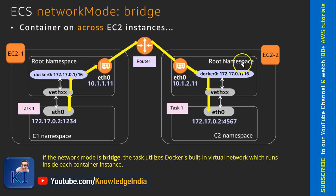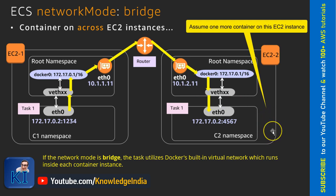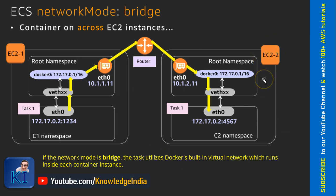For example, some traffic comes to this EC2 instance with IP address 10.1.2.11, on port 80. What happens next is it checks which container and which port that EC2 port 80 is mapped to. It might be that port 80 of this EC2 instance is mapped to a container's port 4567, so it goes there. Port 443 of the EC2 instance might be mapped to some other container. One important thing: at the EC2 instance level, a port can be mapped to only one particular container.